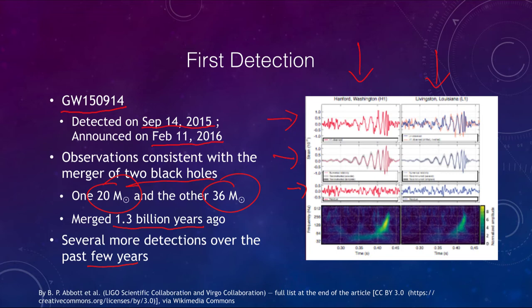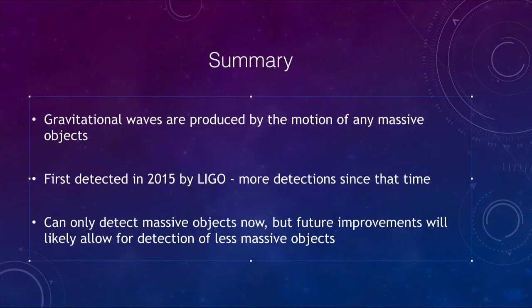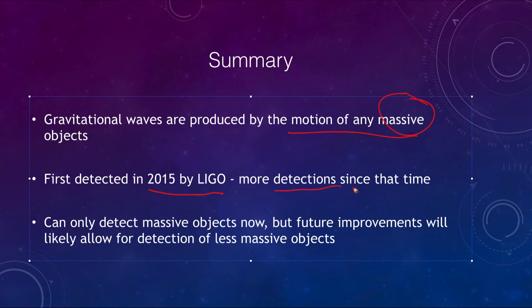Gravitational waves are produced by the motion of any massive object. They were predicted by Einstein in 1916 and finally detected by LIGO almost a century later in 2015, with more detections since then. We are just getting started with this type of astronomy — we can only detect very massive objects colliding now, but future improvements will likely allow for detection of less massive objects over time. That concludes our lecture on gravitational waves. We'll be back again next time for another topic in astronomy. Have a great day, everyone.